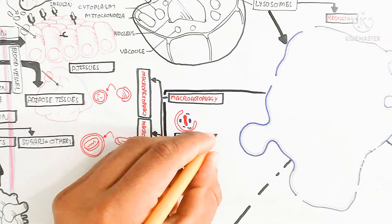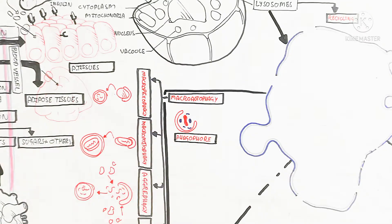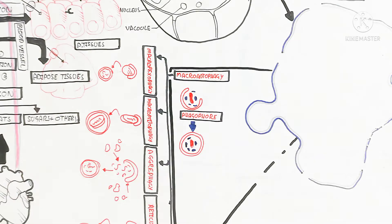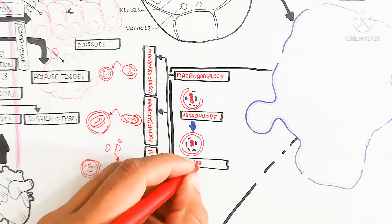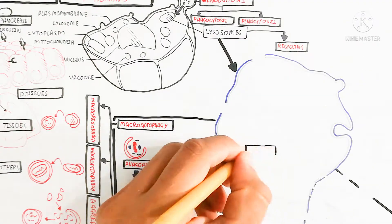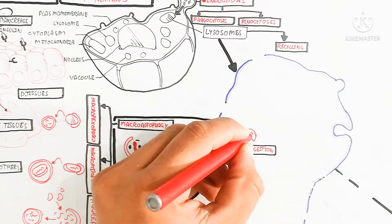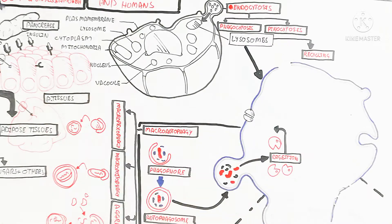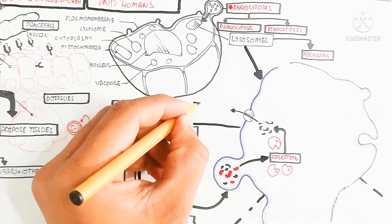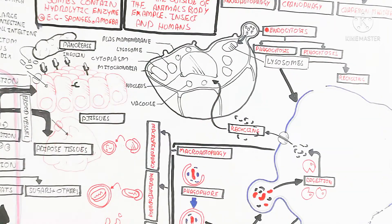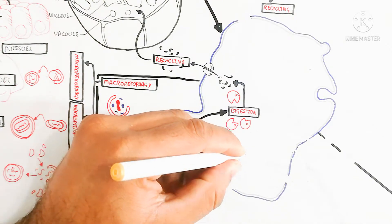Reticulophagy is the recycling of endoplasmic reticulum. In macroautophagy, a phagophore forms after endocytosis of food particles. The phagophore is converted into an autophagosome — a small body — which is then engulfed by the lysosome. Hydrolytic enzymes inside perform enzymatic digestion, breaking food into smaller pieces. These pieces are recycled back into the cytoplasm as simple molecules through catabolism.